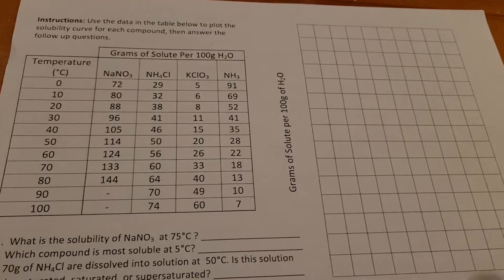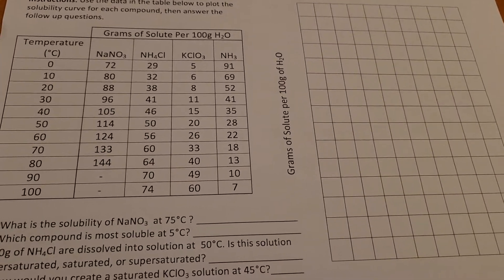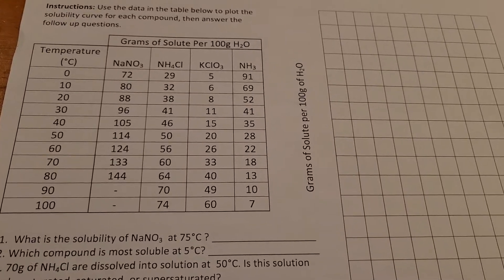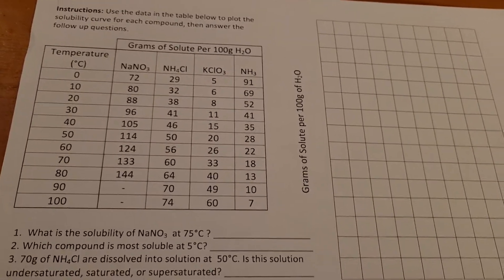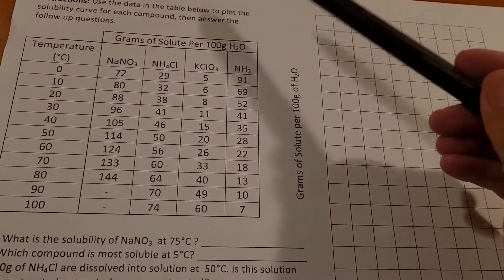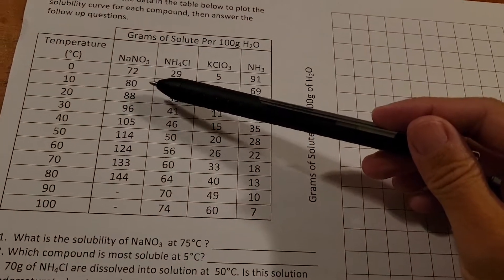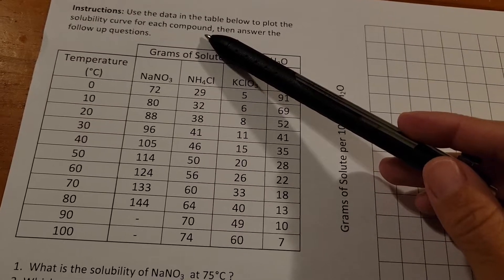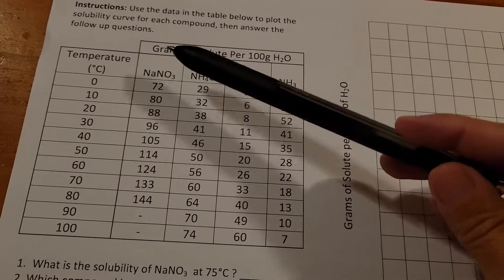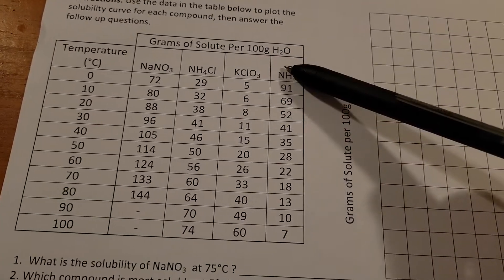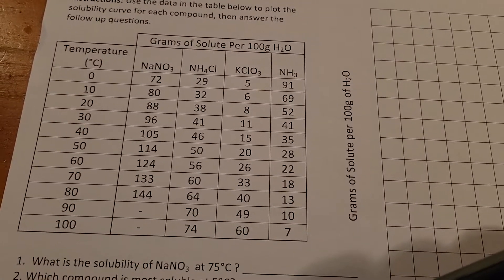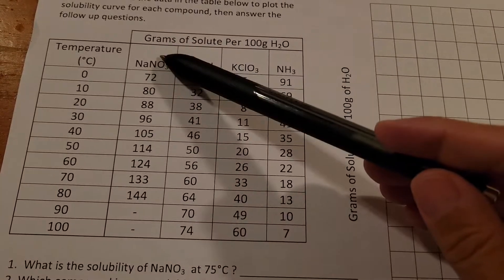To introduce our lesson today, I want you to generate your own graph based on some data. You're going to use the data table below to plot a solubility curve for each compound. You're going to be creating a graph of each one of these and then you're going to be able to answer the questions.